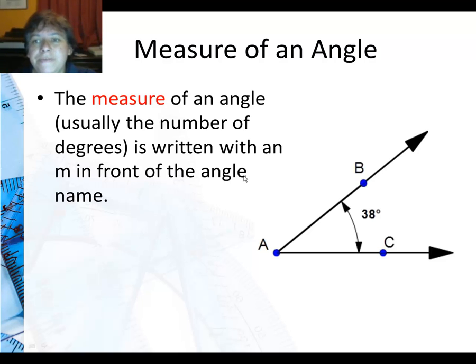For most of our work we will be using three points to name an angle. Now the measurement of an angle, usually the number of degrees, is written with an M in front of the angle name. So for this angle here, the measure of angle A is 38 degrees.